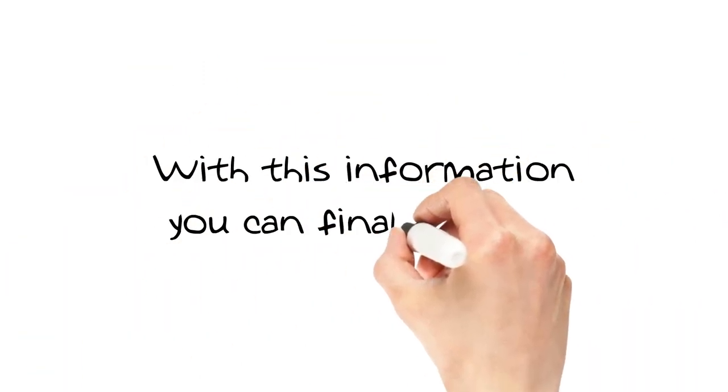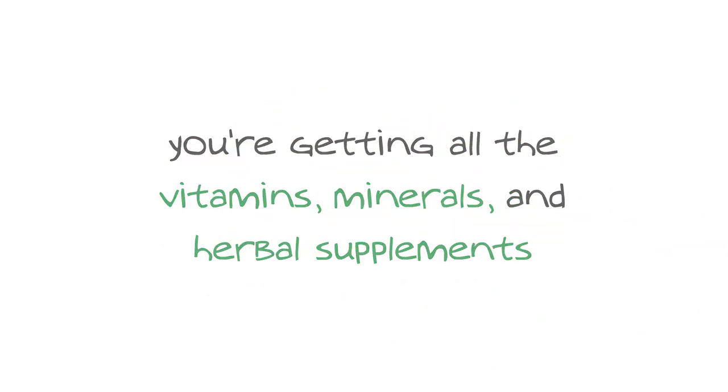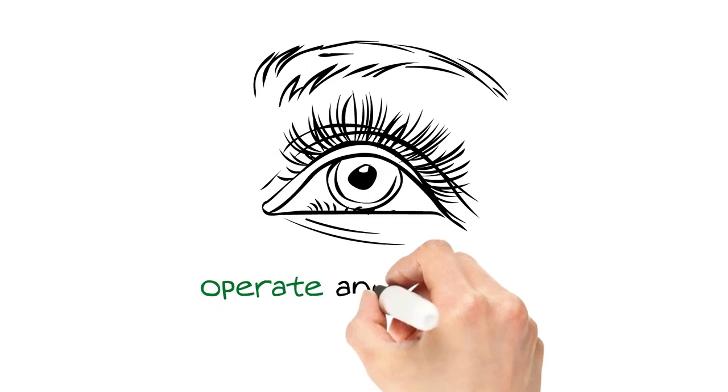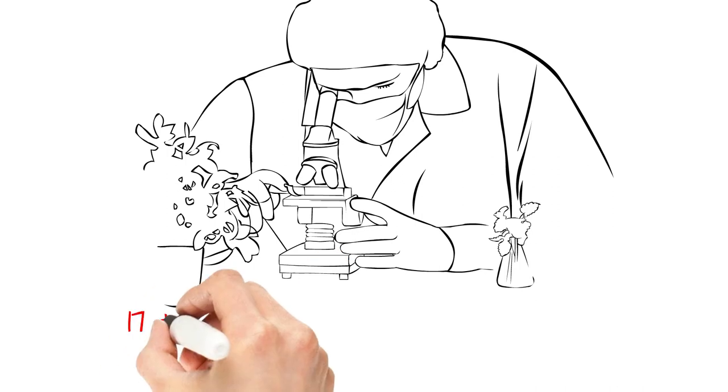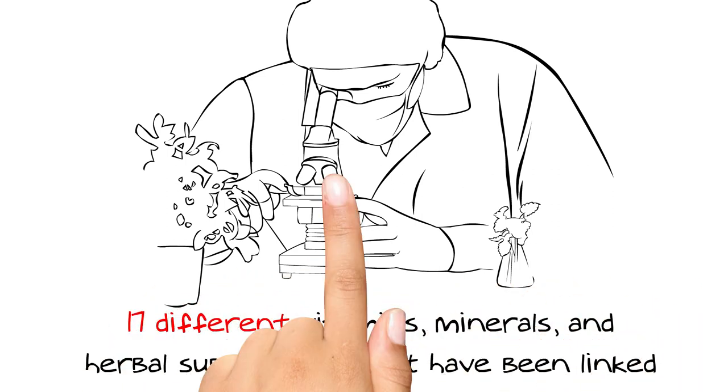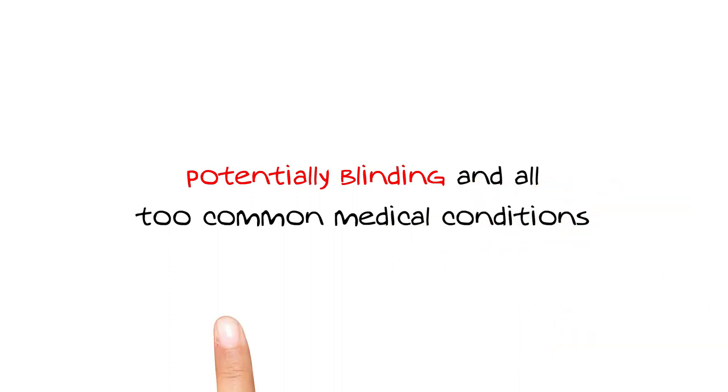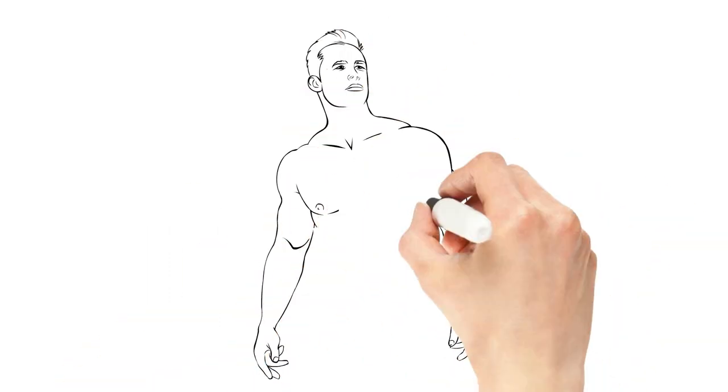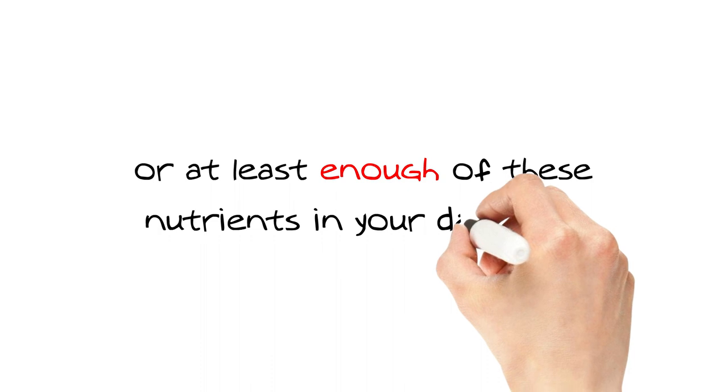With this information, you can finally ensure you are getting all the vitamins, minerals, and herbal supplements that you need for your eyes to operate and perform at their best. You see, we have discovered that there are actually 17 different vitamins, minerals, and herbal supplements that have been linked to better vision health and protecting your eyesight from potentially blinding and all too common medical conditions. And even if you eat like a fitness model and take your daily vitamins, it's very likely that you are still not getting these nutrients or at least enough of these nutrients in your daily diet.